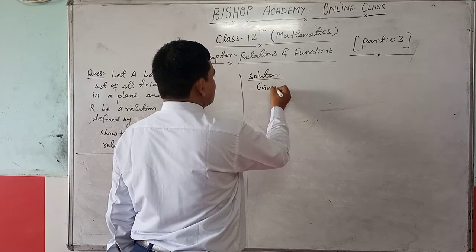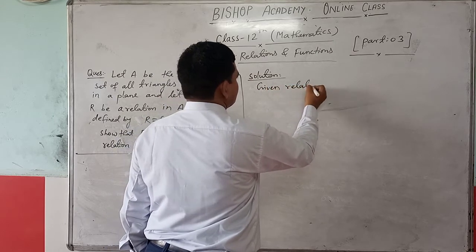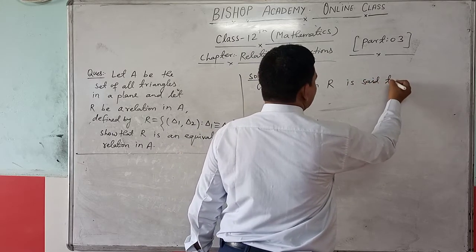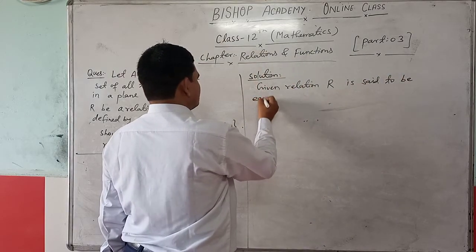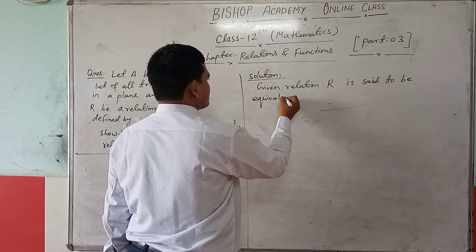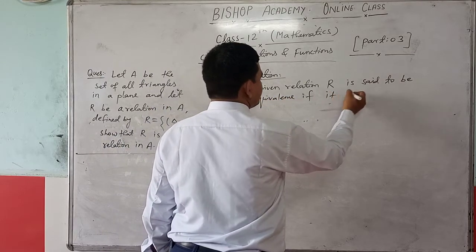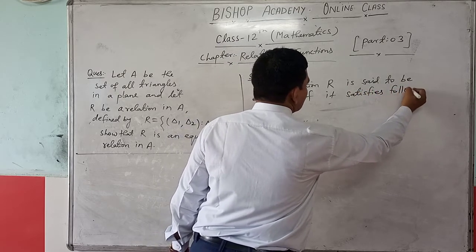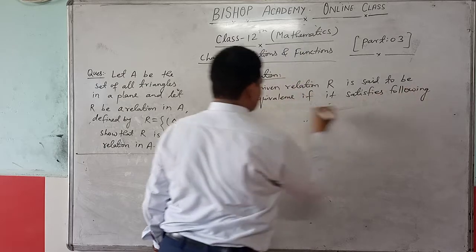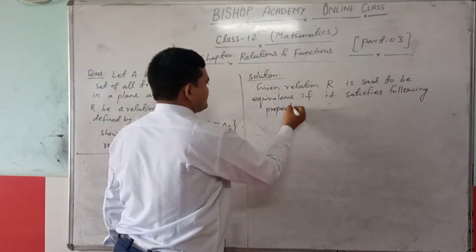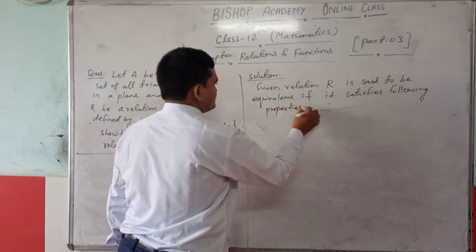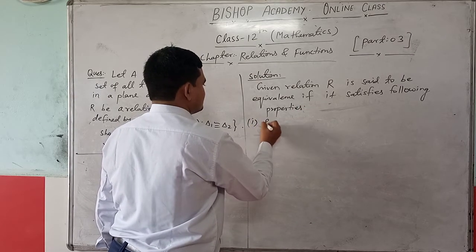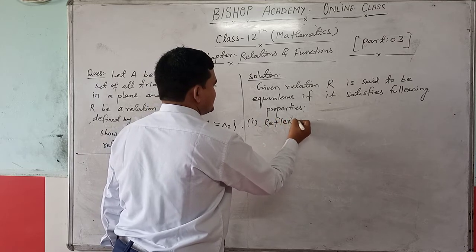Solution. The given relation R is said to be an equivalence relation if it satisfies the following properties. First: reflexivity.